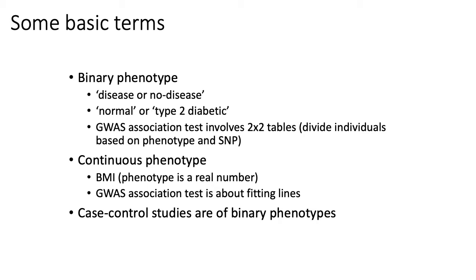In contrast, when you are looking at continuous phenotypes like BMI or height, or even for diseases like type 2 diabetes where some measurements used to determine whether you have diabetes might be continuous, you might try to do a genome-wide association study against a continuous phenotype indicative of type 2 diabetes. Those kinds of association studies basically amount to fitting lines.